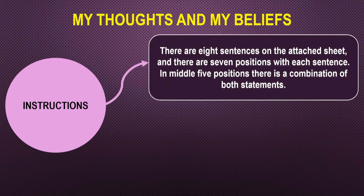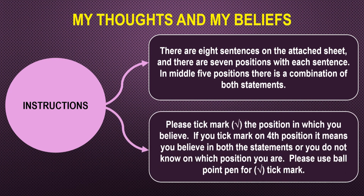It says there are eight sentences on the attached sheet and there are seven positions with each sentence. In the middle five positions, there is a combination of both the statements. So we have a left hand statement, a right hand statement, and a seven point scale in between. Please mark the position in which you believe. Please use this Borgman pen for taking the marks.